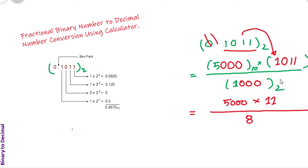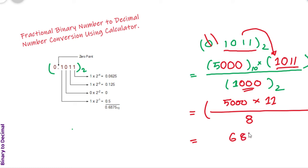If you hesitate about converting these two parts into decimal, you can use the calculator to convert the integer binary into the corresponding decimal number. And finally, this fractional number goes to a decimal number, and if we calculate this then we will get 6875, which is a decimal number.